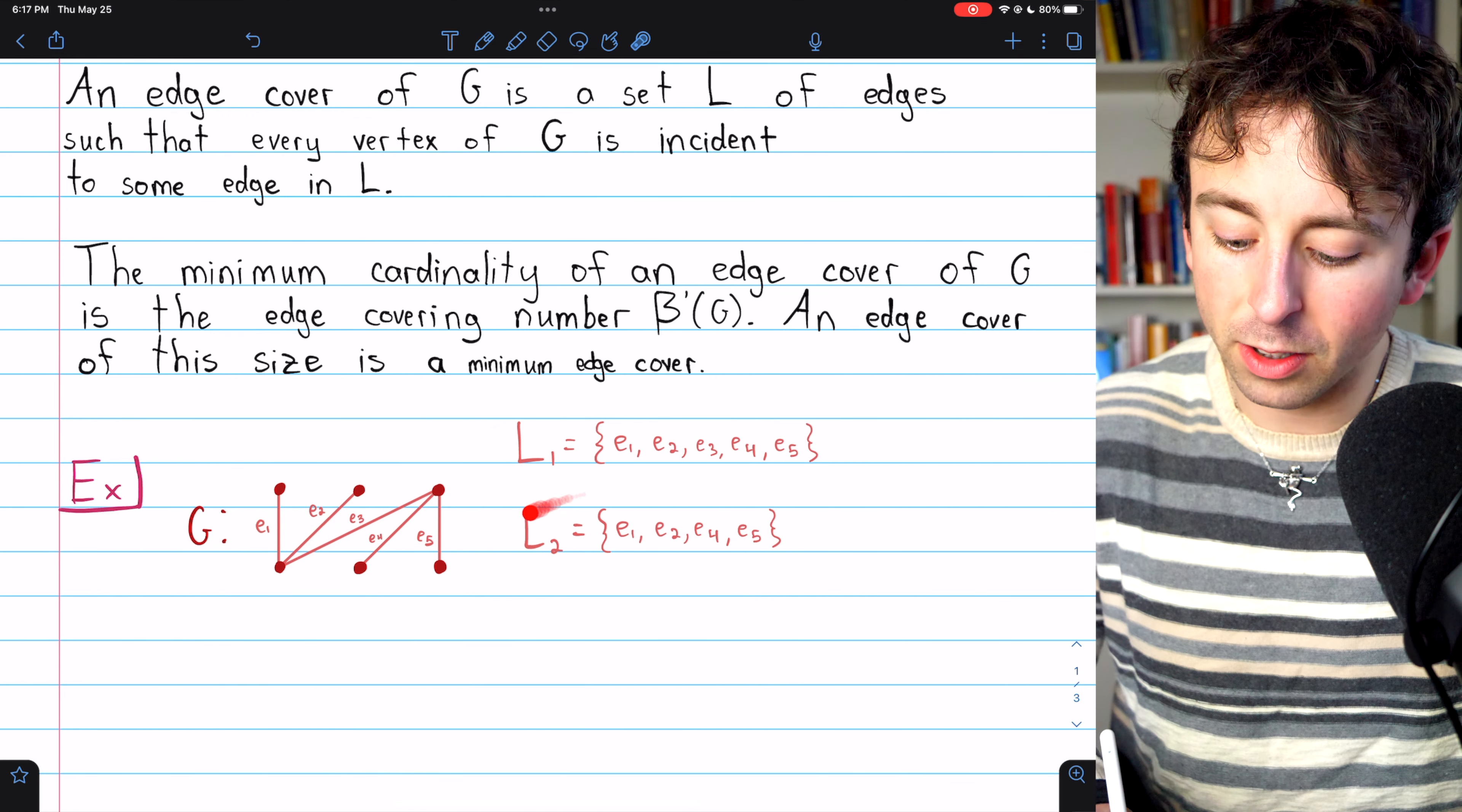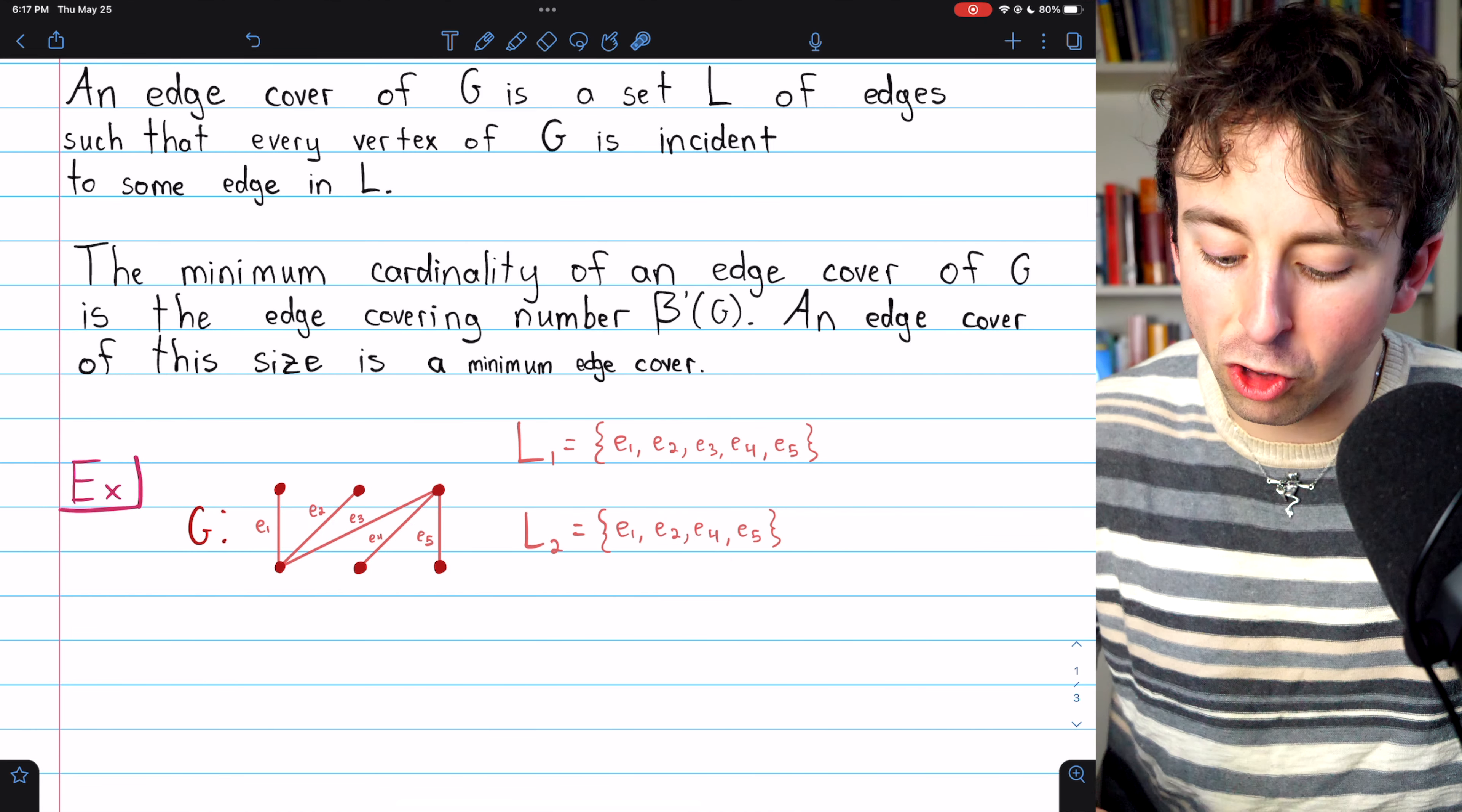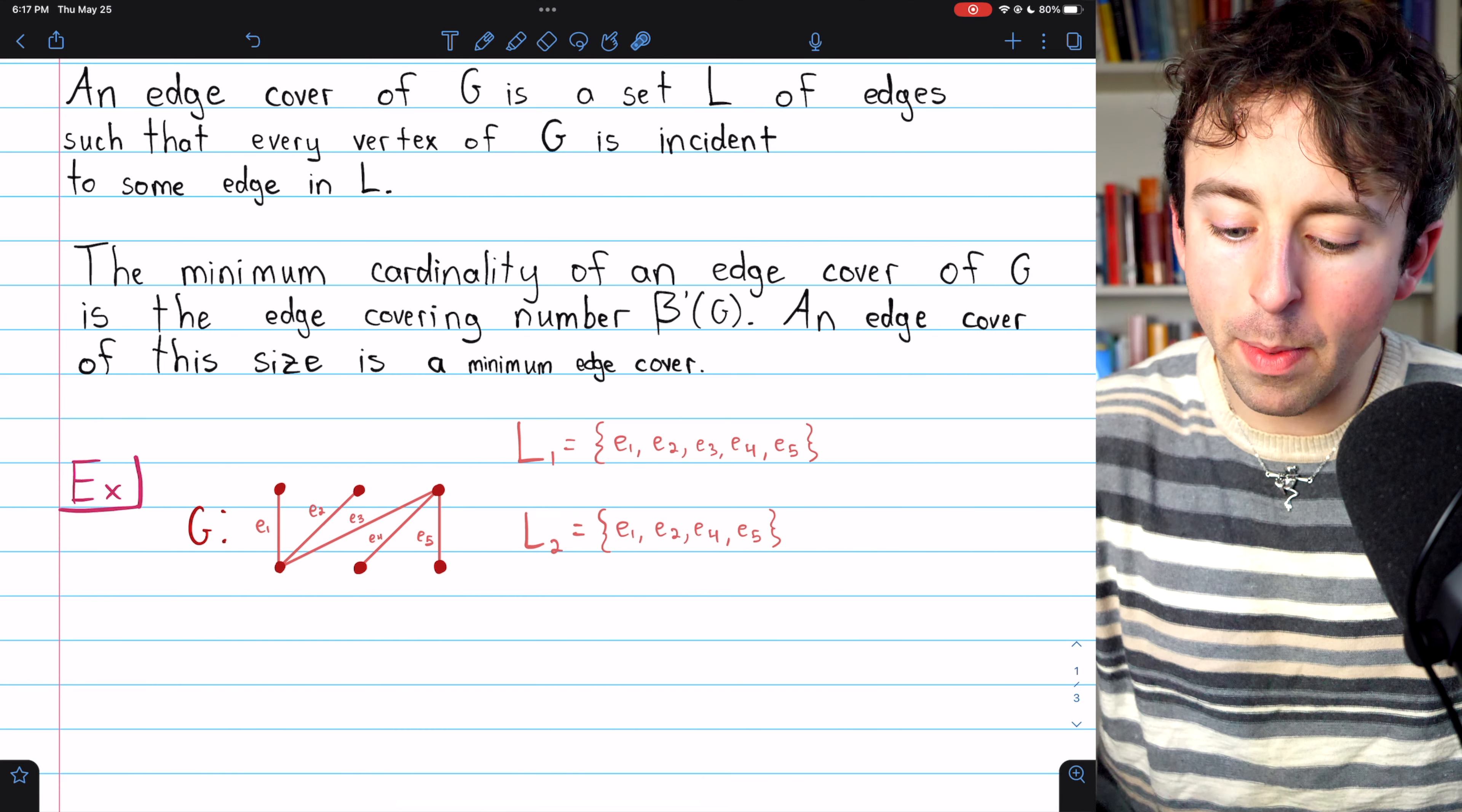This cover, L2, happens to be the smallest possible edge cover of this graph G. So this is a minimum edge cover.